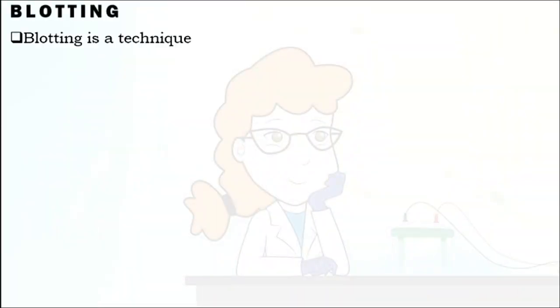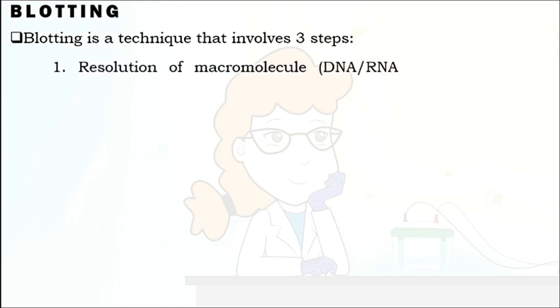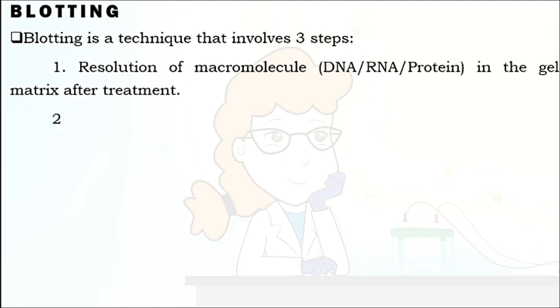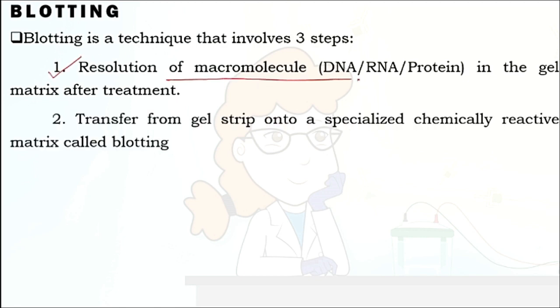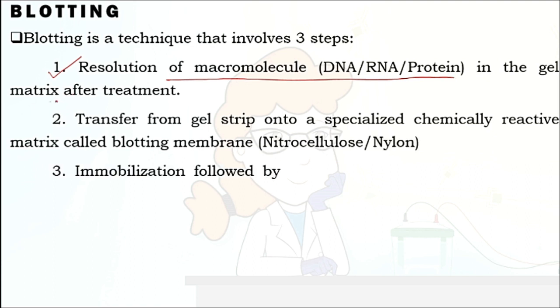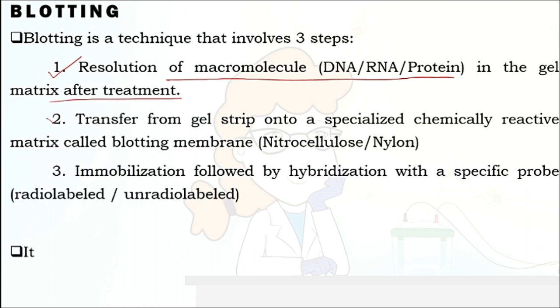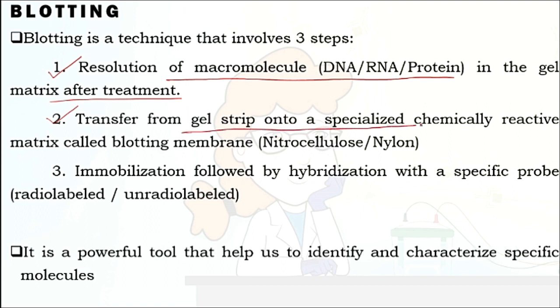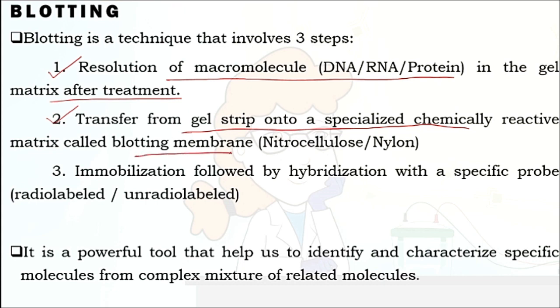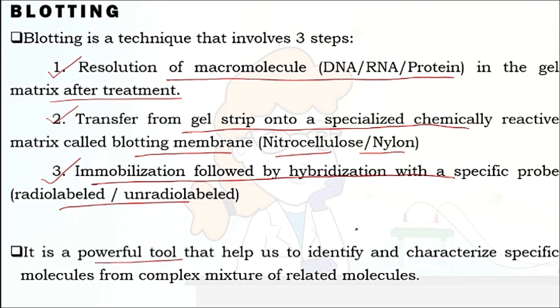So what is blotting? Blotting is a technique that has been divided into three major steps. First is the resolution of macromolecules such as DNA, RNA, and protein onto a gel matrix after treatment. Second is the transfer of such macromolecules from the gel strip onto a specialized chemically reactive matrix known as a blotting membrane — it could be nitrocellulose or a nylon membrane. The third step is immobilization followed by hybridization with a specific probe, which could be radiolabeled or non-radiolabeled. Therefore it is recognized as a powerful tool that not only helps in identifying but also in characterizing any specific molecule from a complex mixture.